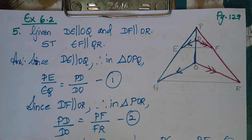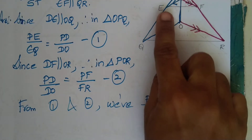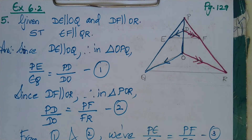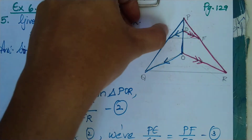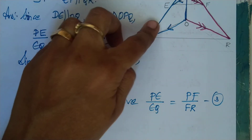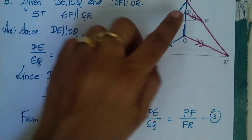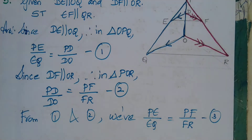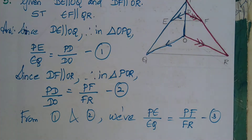Now look at the proof. What we have to prove is EF parallel to QR. We have shown that PE by EQ is equal to PF by FR. Since the two sides PQ and PR are divided in the same ratio, that is the Converse of BPT.